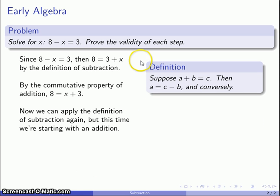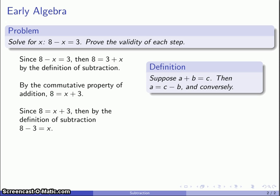So once again we'll compare our definition of subtraction to the equation that we have written. What do we see? Well, a, one of the terms being added, that's going to be x. b, the other term being added, that's 3. And then c, what we obtain, is going to be 8. And so now I'll use my definition of subtraction and I can make the next step. Since 8 is equal to x plus 3, then by the definition of subtraction, 8 minus 3 is equal to x.